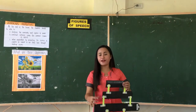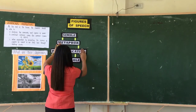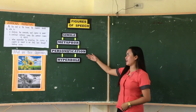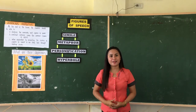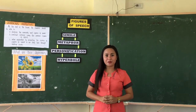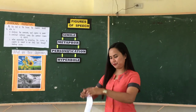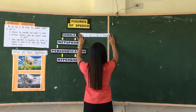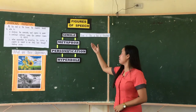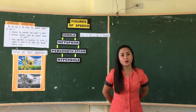Now, I have here commonly used figures of speech. We have here simile, metaphor, personification, and hyperbole. So what is simile? Simile is a figure of speech that makes a direct comparison through the use of 'like' or 'as.' For example, 'Life is like a box of chocolate.' Life can be described as similar to a box of chocolate, and we can see in this sentence that there is the word 'like.'